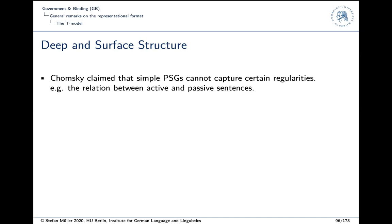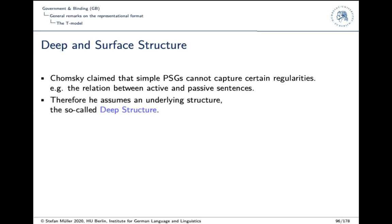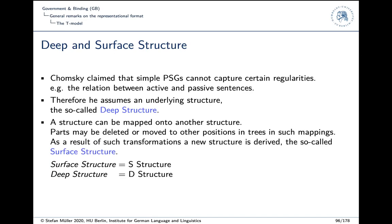The basic architecture of Government and Binding is called the T-model. Chomsky argued that simple phrase structure grammars cannot capture regularities such as the relation between active and passive, so he assumes an underlying structure — the so-called deep structure (D-structure). From this, a surface structure (S-structure) is derived via transformations. To avoid confusion, people use the terms S-structure and D-structure rather than 'surface structure' and 'deep structure.' The idea is that you have trees and derive other trees from them; the result is S-structure.